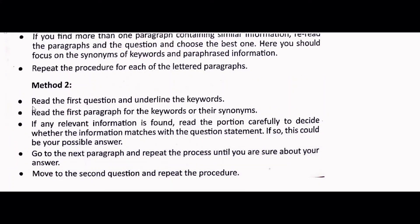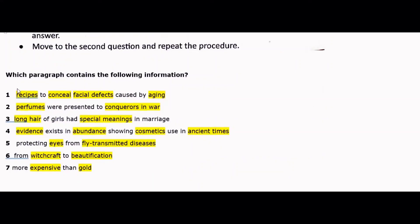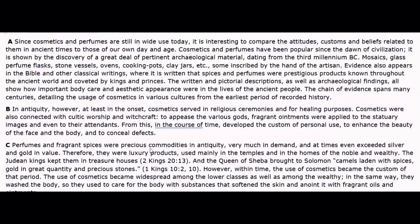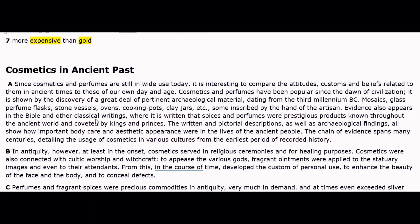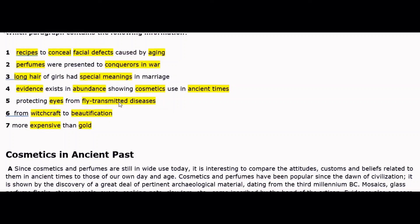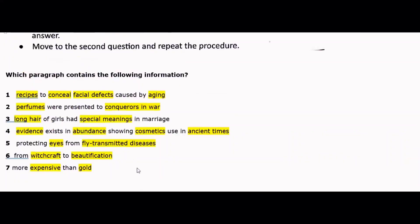The second method is: read the first question and underline the keywords. Read the first paragraph for similar keywords. If relevant information is found, read the portion carefully to decide whether the information matches the question statement. If so, this could be the possible answer. Go to the next paragraph and repeat the procedure until you are sure about the answer. Then move to the second question and repeat the procedure. So in this method, we read the first question, then read all the paragraphs, and decide which one is the suitable match — it could be A, B, or any paragraph.